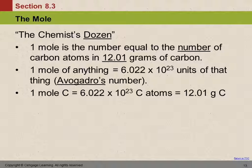All those numbers on the periodic table have a new use — they are the mass in grams of one mole of that element. One mole: 6.022 times 10 to the 23rd.